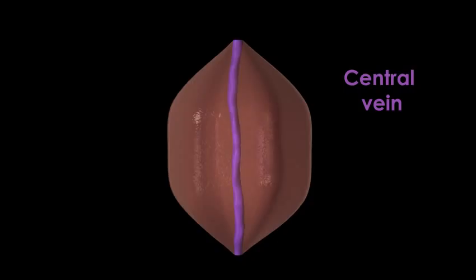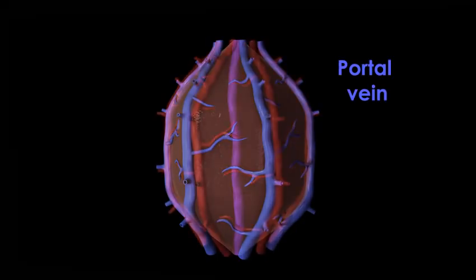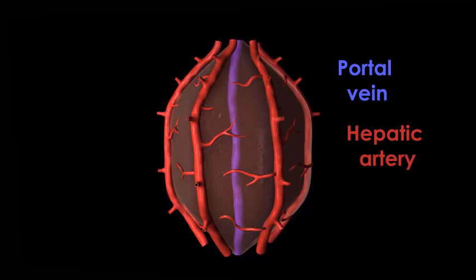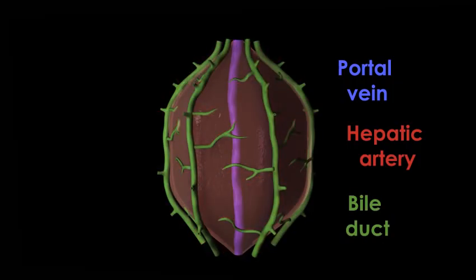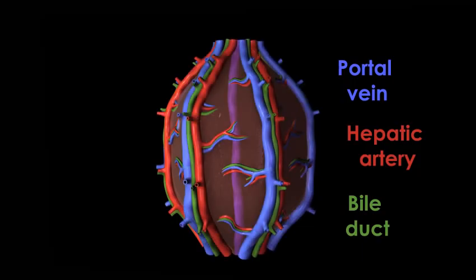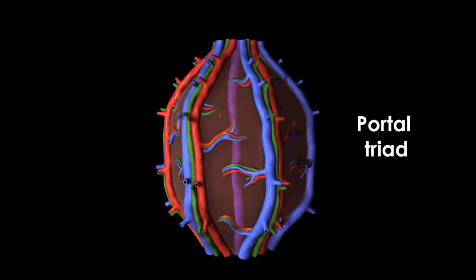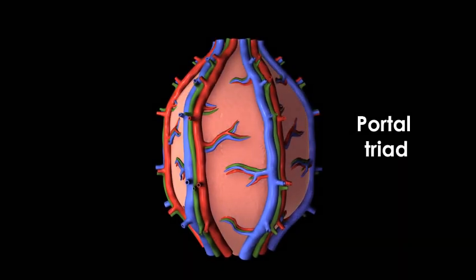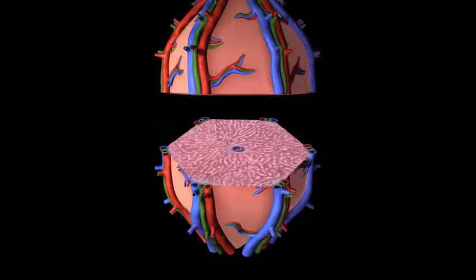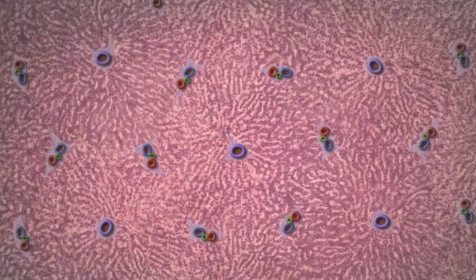Located at the lobule periphery are branches of the vessels supplying incoming blood: the portal vein and hepatic artery. Also located here is the bile duct. Collectively, the portal vein, hepatic artery, and bile duct together comprise the portal triad.